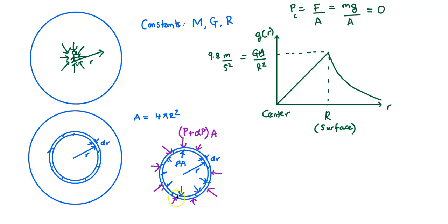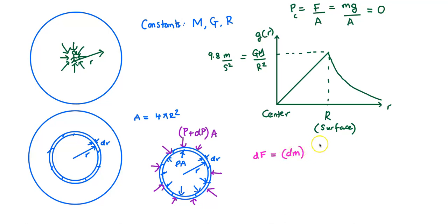Are these the only forces on this element? No — we forgot one more very important force, and that comes from the acceleration due to gravity. The force on this tiny spherical element due to the rest of the Earth is dF = dM times the acceleration due to gravity at that point r.